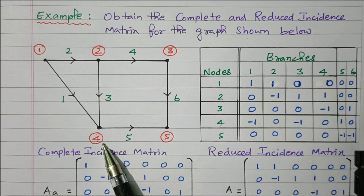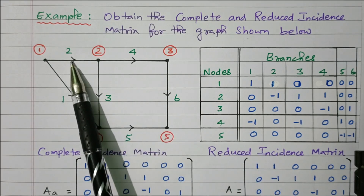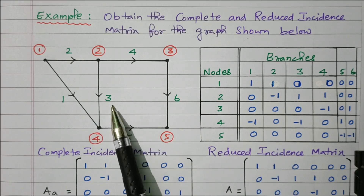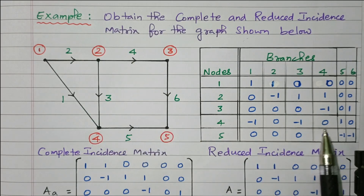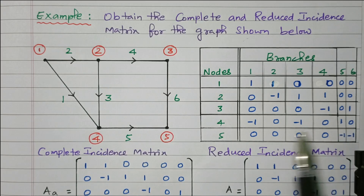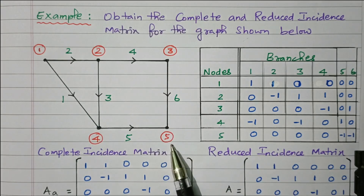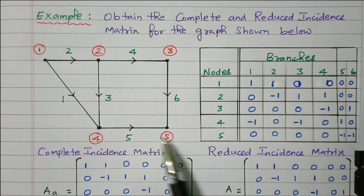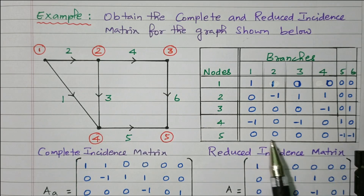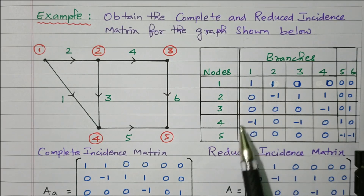For node four, branch one is coming inside — minus one. Branch two is not connected — zero. Branch three is coming inside — minus one. Branch four is not connected — zero. Branch five is going away — plus one. Branch six is not connected — zero. For node five, only branches five and six are coming inside — minus one, minus one. Branches one, two, three, and four are not connected — zero. This completes the complete incident matrix, which has five rows and six columns.